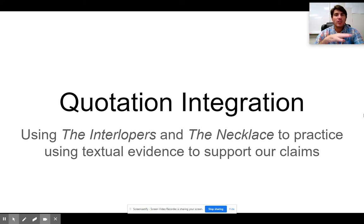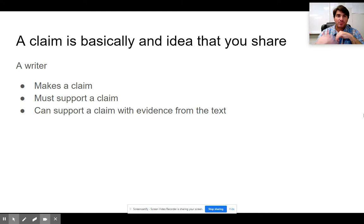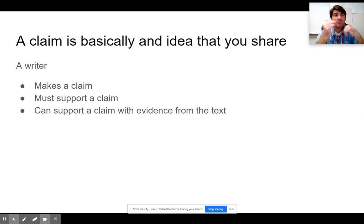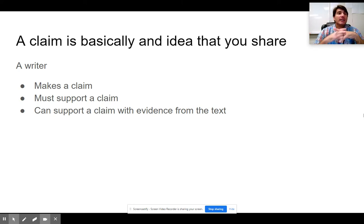We're going to look at The Interlopers and The Necklace and what this means. First off, you have to start with a claim. A claim is very simply an idea that you have and that you're sharing. In an essay or in a paragraph, you're going to make some kind of claim — you're going to say something about the text. Then you have to support it. You have to find evidence in the story that can support your idea. You have to support your claim with evidence.